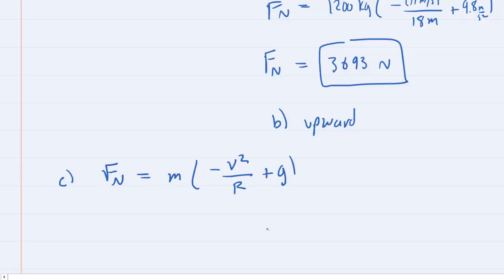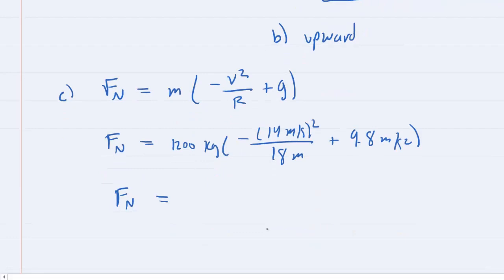But we'll simply change the value of the speed. So the mass will be 1,200 kilograms multiplied by negative. This time the speed is 14 meters per second. We'll square it, divide that by the radius, and then add g to that value. And then we'll punch that into our calculators. And what's interesting is in this case, we get a negative answer for the normal force. So we get negative 1307 newtons, approximately.